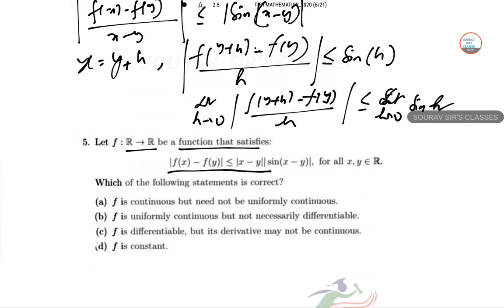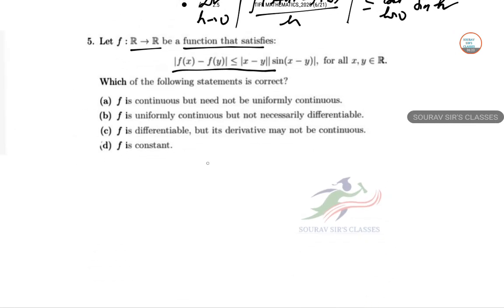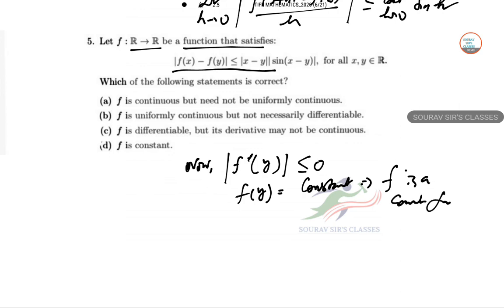So limit h tends to 0 less than or equal to limit h tends to 0 sin h. Now, less than or equal to 0. Constant function, so this is the correct answer.